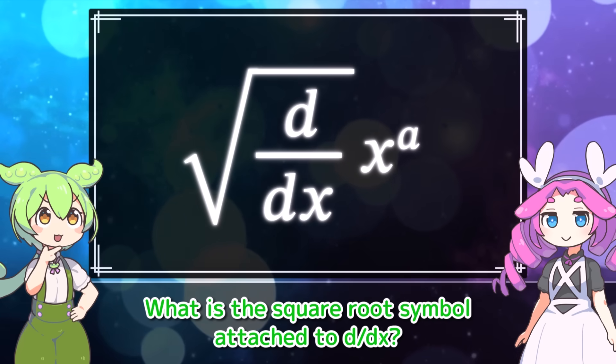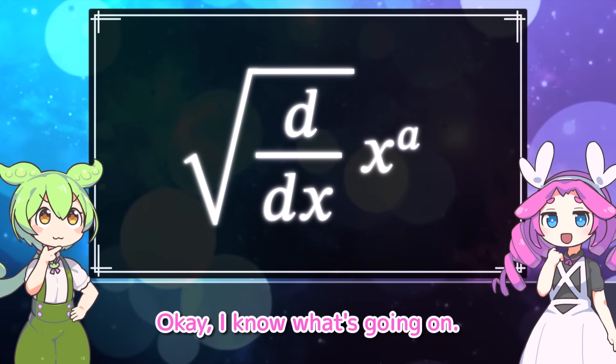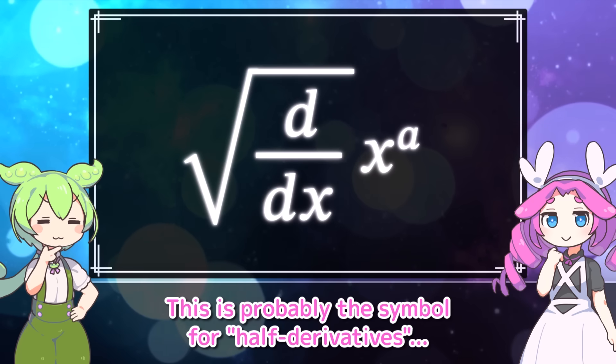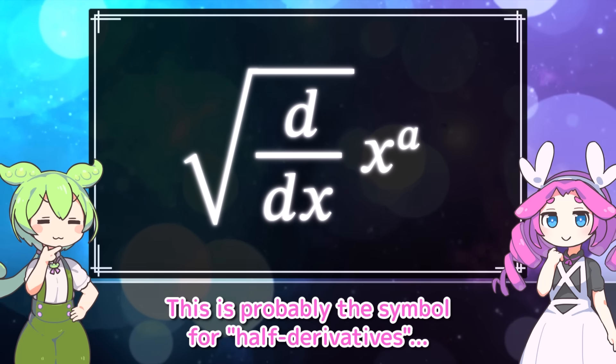A strange problem suddenly appeared. What is the square root symbol attached to d by dx? I know what's going on. What? What do you mean?